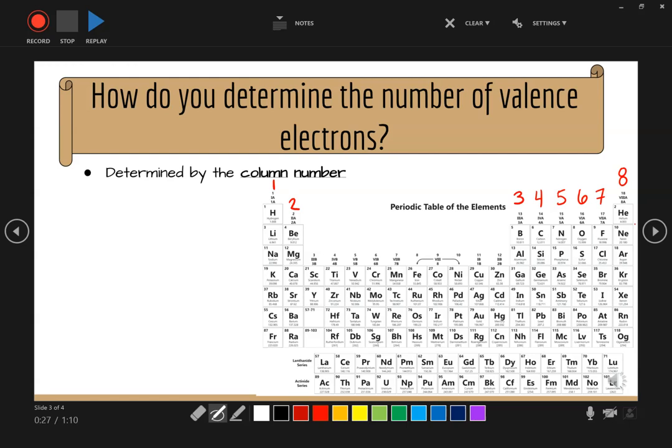What I want you to be careful with is valence electrons is different than the charge. So make sure you have somehow differentiated that. Valence electrons is the same as the column number.